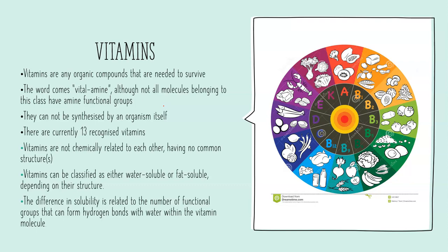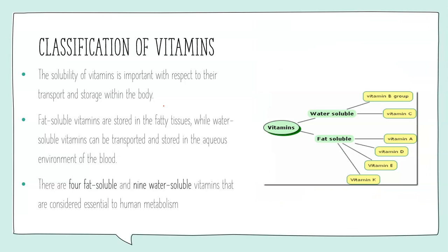We classify vitamins as water-soluble or fat-soluble, which is dependent on their structure and ultimately their polarity. The difference in solubility comes down to the number of functional groups that can form hydrogen bonds with water. This solubility is important in terms of how they're transported and stored within the body — fat-soluble vitamins are stored in fatty tissues and the liver, whereas water-soluble vitamins aren't stored at all and are instead transported around in the aqueous environment of our blood and excreted when passing through waste systems.